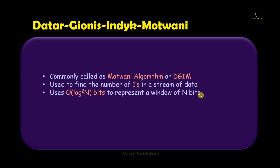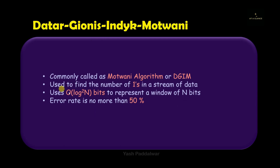The speciality of this algorithm is that it uses logarithmic space to represent a window of n bits. So if a given stream contains total n bits, this algorithm is not going to take all the n-bit space. Rather, it will take logarithmic space to represent the entire set of n bits. One more advantage is that the probability of getting a correct result will always be greater than 50%.